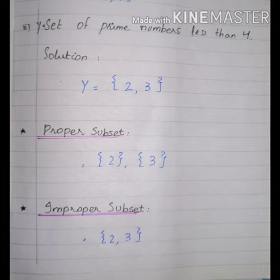For improper subset, we want to include both elements from the original set. Since these two elements are the same as the original set, we will make {2, 3}. It is called improper subset.